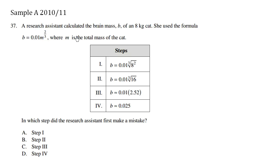A research assistant calculated the brain mass B of an 8 kilogram cat. She used the formula B equals 0.01m to the power of two-thirds, where m is the total mass of the cat. So we have some steps here. We're trying to find where the research assistant made a mistake.